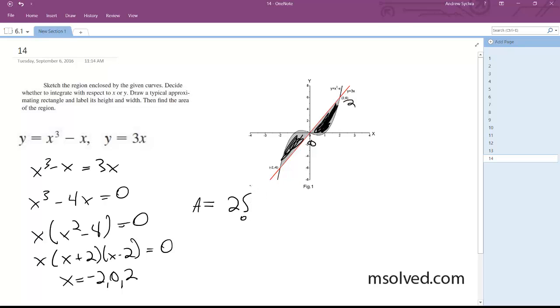Alright, 0 to 2, 3x minus x cubed plus x dx is equal to 2 quantity 0 to 2,